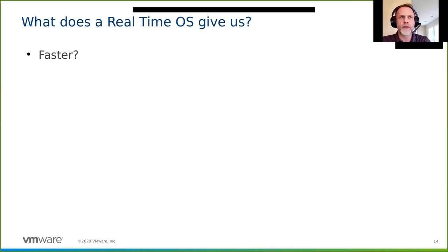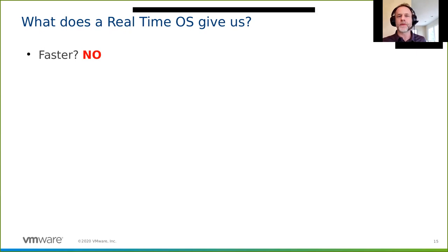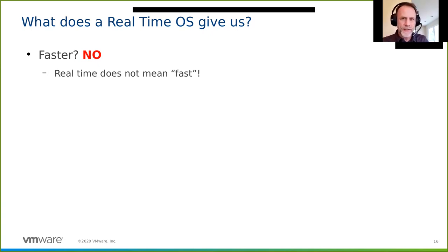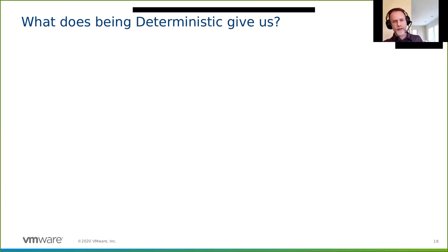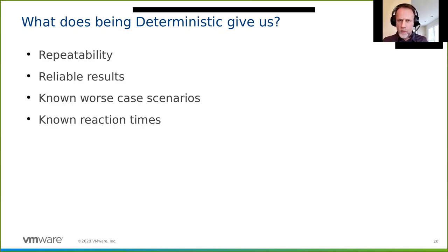What does a real-time operating system give us? Many people come to me expecting the PREEMPT_RT patch to make their system faster. Is it faster? No—sometimes it's actually slower. Real-time does not mean fast. It means actual time. What it gives us is determinism, which means repeatability, reliable results, and a known worst-case scenario. When something has to get done within a deadline and it doesn't, the system fails—period.